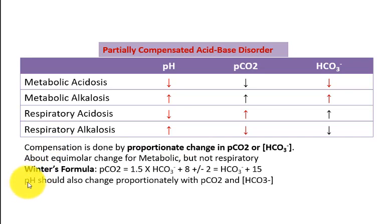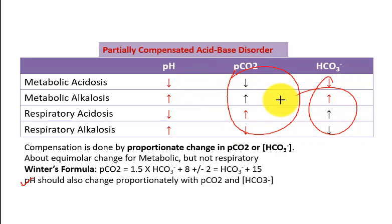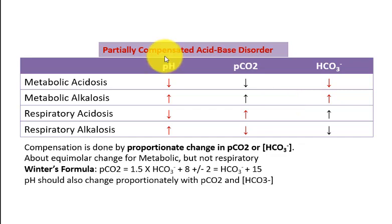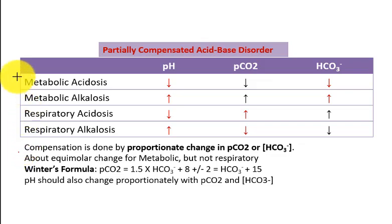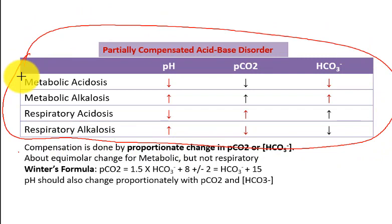This is how we approach mixed acid-base disorders. Sometimes you will find that in some acidosis the pH will be normal, but there will be a very high drop in bicarbonate and carbon dioxide. But pH is normal — how can that be possible? This type of condition is called a mixed acid-base disorder. To understand mixed acid-base disorders, you first need to understand and memorize this whole table.